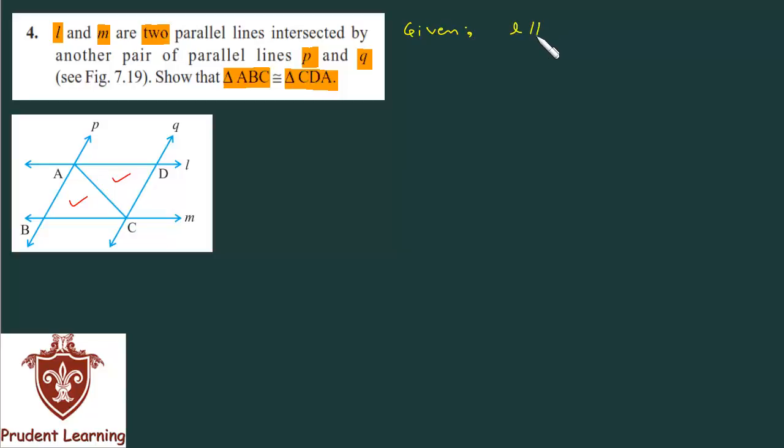L is parallel to M and P is parallel to Q. In quadrilateral ABCD, AB and CD are parallel, and BC and AD are parallel.